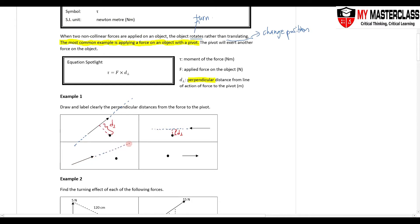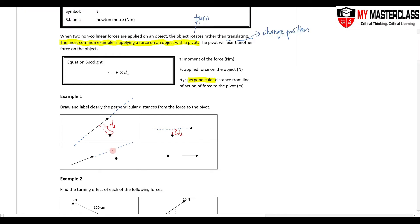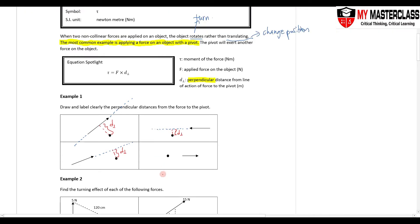Let's do it one more time. The line of action of the force — that's the first thing you always extend. When given a question with multiple forces, take out your ruler and extend every force first. Then, for every force, draw in and label the perpendicular distance. Only then do you concern yourself with how long that distance actually is.